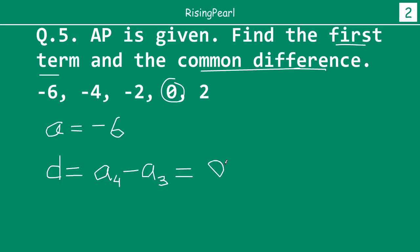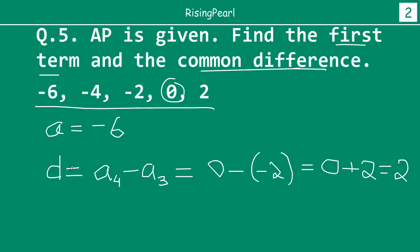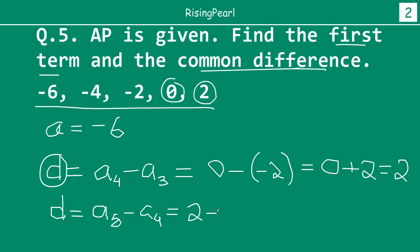So what is A4? A4 is 0, minus what is A3? A3 is minus 2. Just want to make sure that you keep in mind that the term itself is negative and this minus is the subtraction sign — you are subtracting A3 from A4. So it will be 0, and minus minus will become plus 2, so 0 plus 2 is 2. That means in this particular arithmetic progression, the common difference is 2. Similarly, if you would have picked the fifth term, then D would have been A5 minus A4, which will equal 2 minus 0, and we would have gotten the same value for the common difference, which is 2.